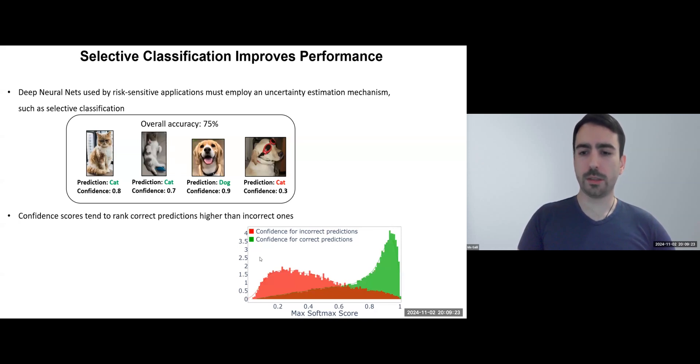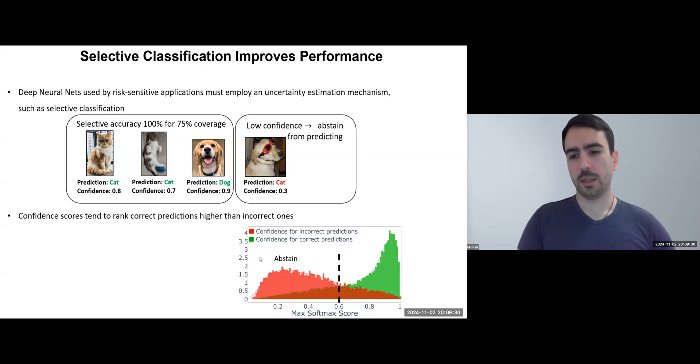We can set a threshold on these scores, so the model abstains when confidence is low. Here, we set a threshold of 0.6, instructing the model to avoid returning predictions below this score.